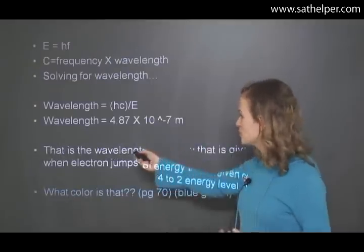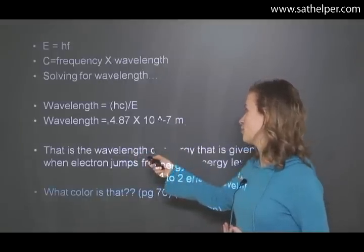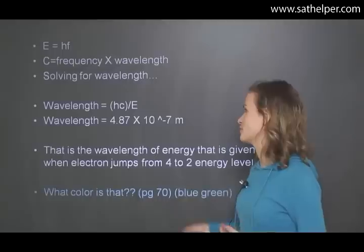So we know that the energy evolved was whatever we calculated it to be in here. And now we simply put that in. So the wavelength, you should have gotten this number 4.87 times 10 to the negative seventh meters.